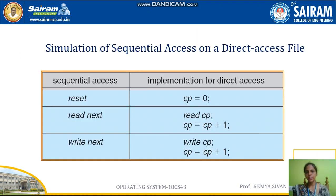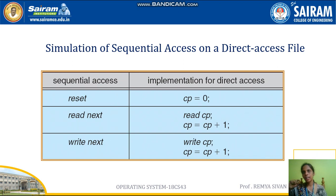Now, simulation of sequential access on a direct access file. The first operation is 'reset.' Reset means go to the first position. To implement reset using direct access, set CP equal to 0, where CP is a variable and 0 is the first block number. That is equivalent to the reset operation.